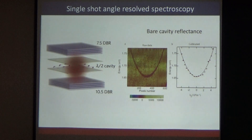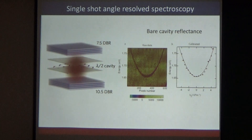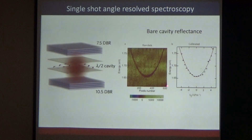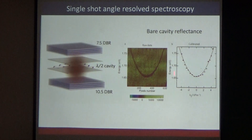If we go to a region of the sample far from the monolayer — just the bare cavity — and perform a reflectance measurement, we get a parabolic shape. This also calibrates the setup: knowing the dispersion formula, we know at each energy what pixel number corresponds. Feeding this formula with the bare cavity curve and the refractive index of the cavity material gives the exact k-parallel as a function of energy. Essentially, we produce the bare photon dispersion curve through this experiment.